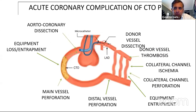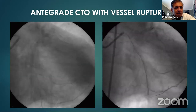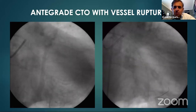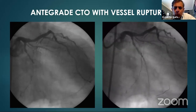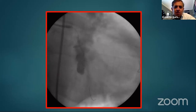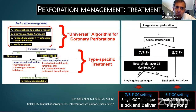Starting with main vessel perforation in an antegrade approach: a case of circumflex occlusion that opened quite quickly, but due to calcification proximal to the CTO, a huge perforation resulted. The proximal circumflex is very complex to treat surgically because you need to close the left main, so treatment must be via covered stent.